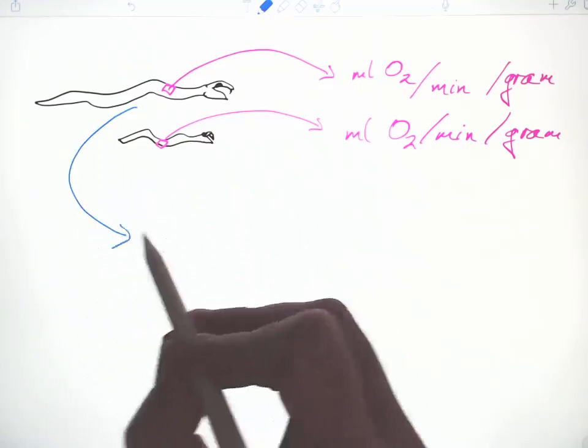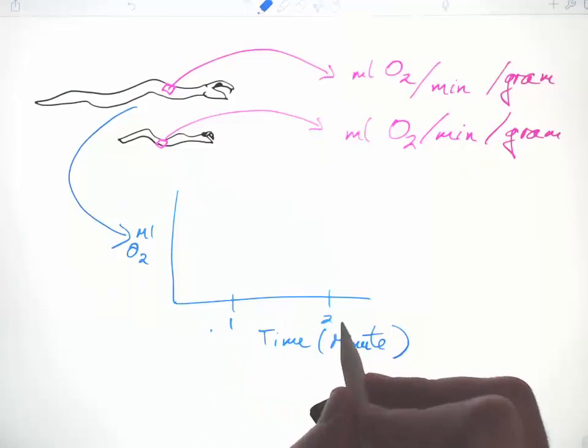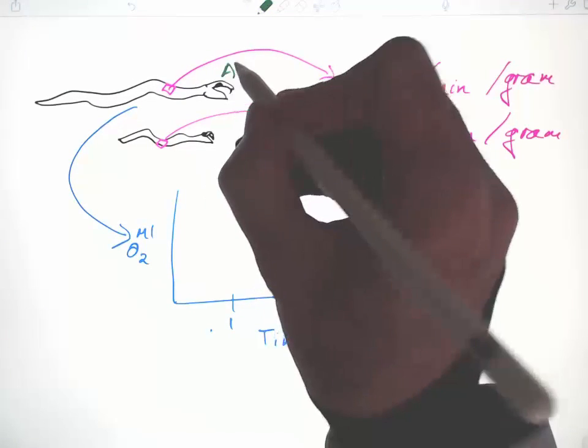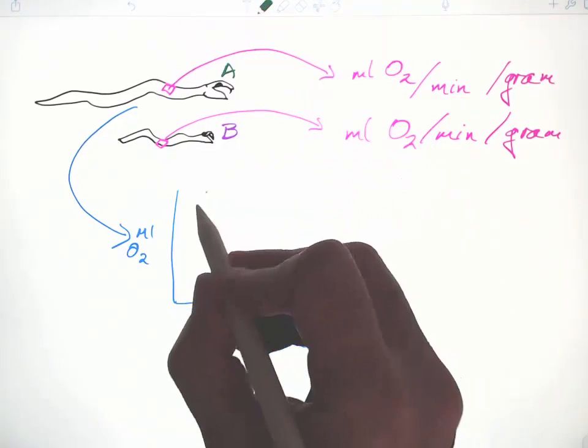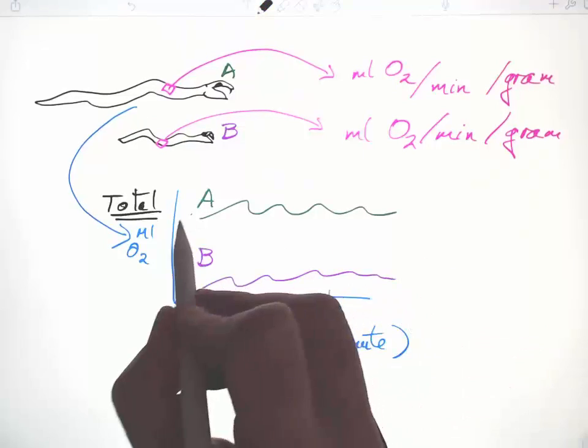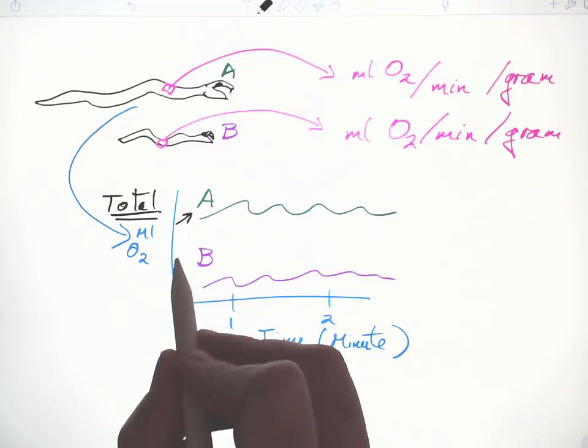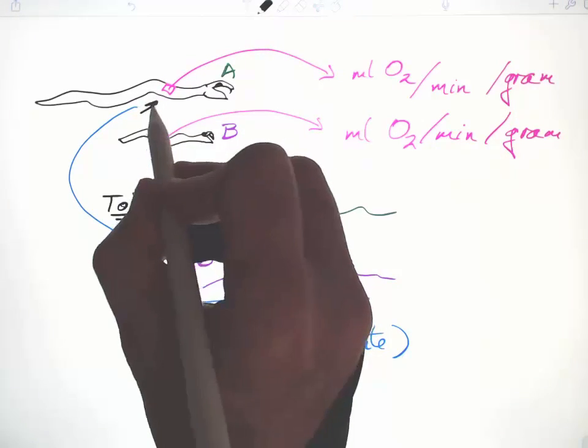So if we graphed the amount of oxygen used per unit time for a big snake and a small snake, snake A here and snake B, snake A will have a higher use of oxygen than snake B because snake A is much bigger.